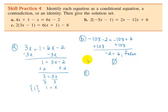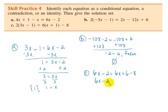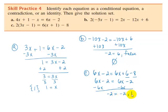Part C, you should have found that it is an identity with all real numbers as solutions. We get 6x minus 2 equals 6x plus 6 minus 8. Simplifying gives us 6x minus 2 equals 6x minus 2. If you don't see it here, you can subtract 6x from each side to get negative 2 equals negative 2, a true statement. So all real numbers are solutions.